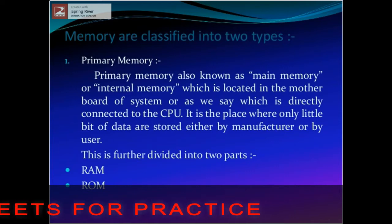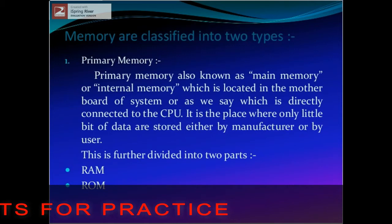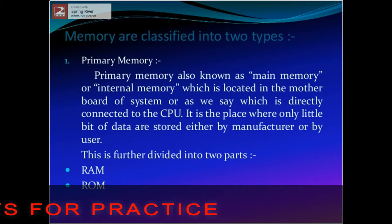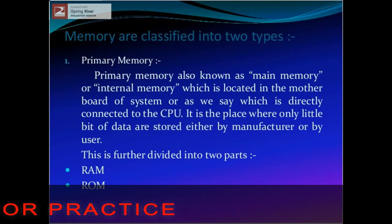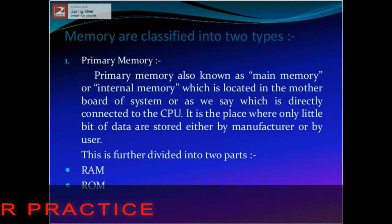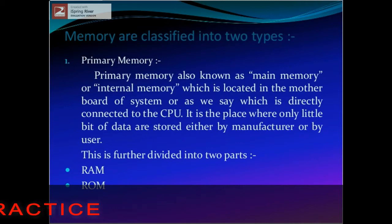Primary memory, which is also known as the main memory or internal memory, is located in the motherboard of the system. This is further divided into two parts: RAM and ROM.